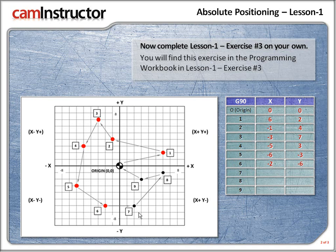On to lucky 7. For the x, it's to the right of the y-axis, so we're going to have a positive amount. How much? 1, 2 squares. So for position 7, the x is 2. Now what about the y? We're below the x-axis, so it's going to be a negative amount. How many squares? 1, 2, 3, 4, 5, 6. Negative 6. So for position 7, x plus 2 and y negative 6.